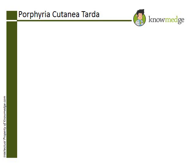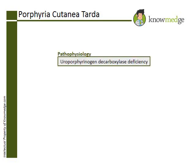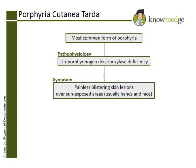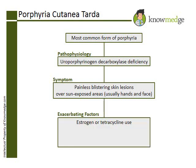Patients with uroporphyrinogen decarboxylase (UROD) deficiency have porphyria cutanea tarda (PCT), which is the most common form of porphyria. In PCT, patients may experience blistering skin lesions over sun-exposed areas, usually the hands and face. Exacerbating factors include estrogen use, chronic alcohol use, hemochromatosis, and hepatitis C infection.